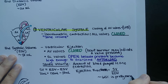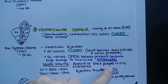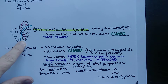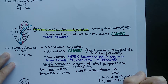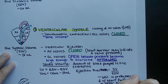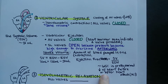Ejection fraction becomes clinically relevant after a heart attack, when the heart muscle can no longer pump as much blood as before. If stroke volume decreases but end diastolic volume remains the same — the heart is still filling normally but not ejecting as much — then this percentage goes down. Ejection fraction decreases with heart failure or after a myocardial infarction.